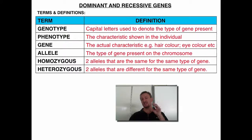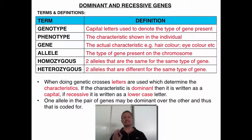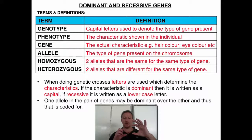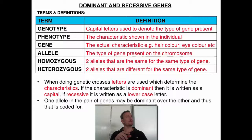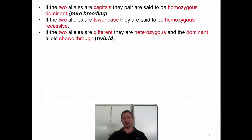Dominant characteristics will always be shown with a capital letter; recessive will always be written as a lowercase letter. When you're choosing your letter, make sure you choose one that has a clear difference between capital and lowercase. Don't use something like O, S, or C because when you're writing quickly it's very difficult to see whether you're dealing with a capital or a lowercase. Often use the dominant characteristic — so for brown hair, I use a big B. One allele in the pair of genes may be dominant over the other, coding for different types.